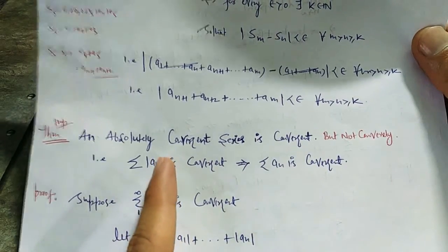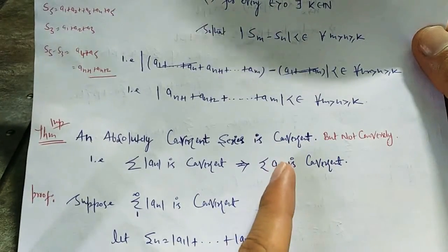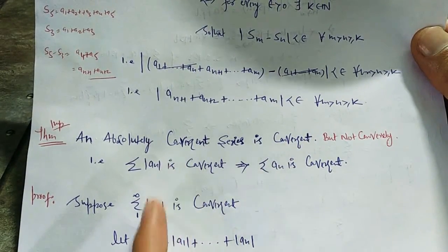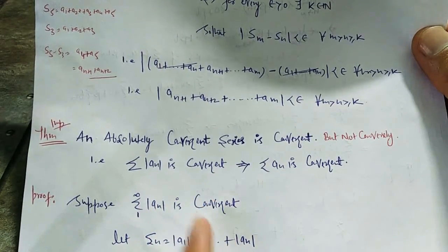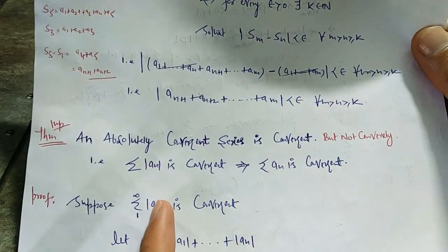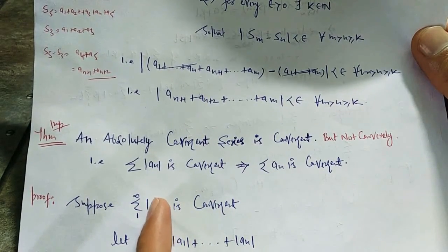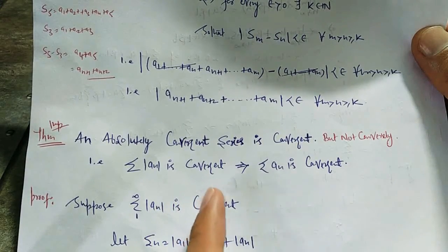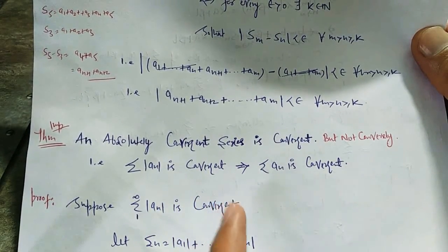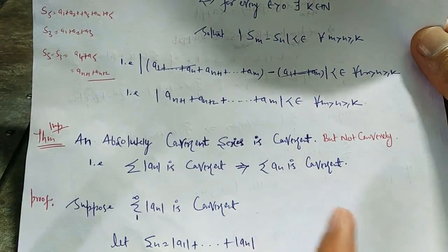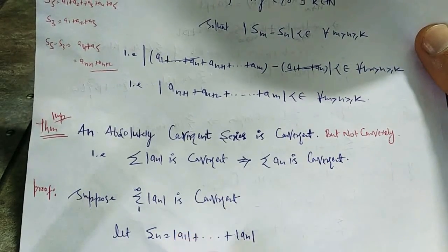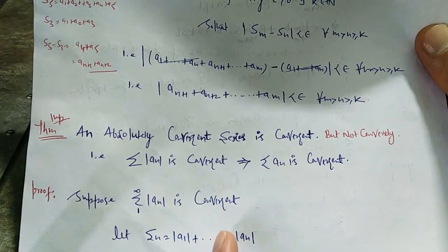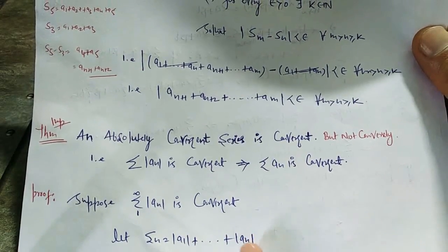Suppose series |aₙ| is convergent — that is our assumption — and our claim is to show that the series aₙ is convergent. So suppose series |aₙ| is convergent. If we expand: |a₁| + |a₂| + |a₃| + |a₄| + |a₅| + |a₆| + ... and so on. The sum of the first n terms is |a₁| + |a₂| + ... + |aₙ|.